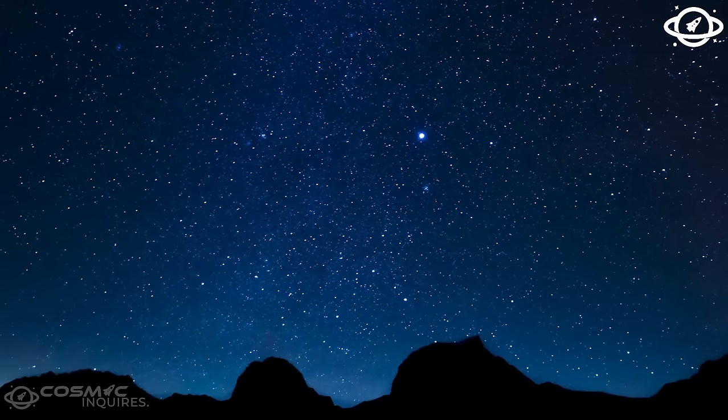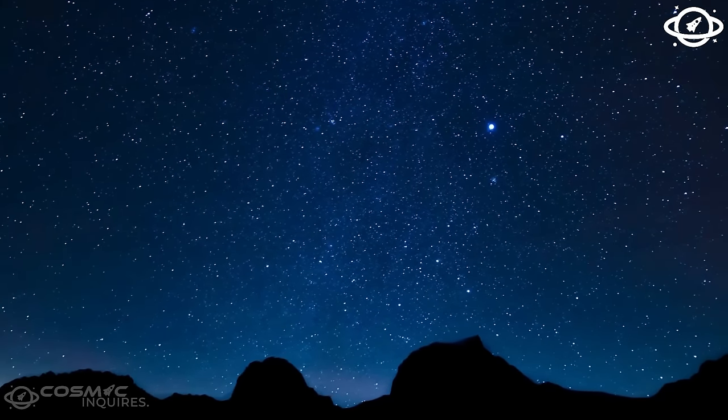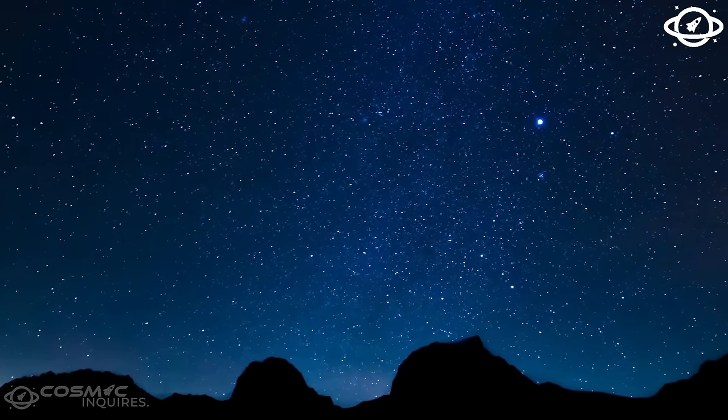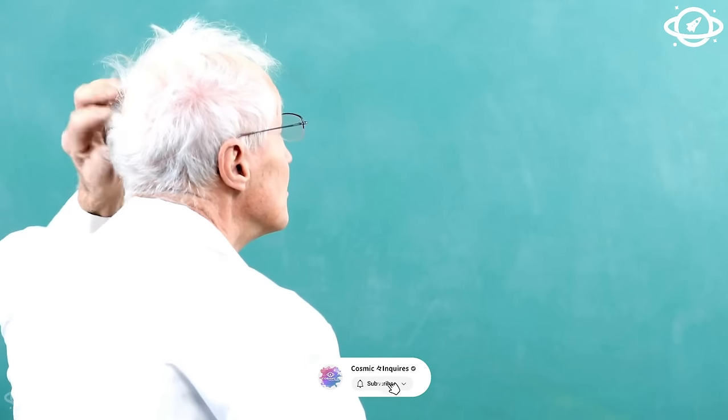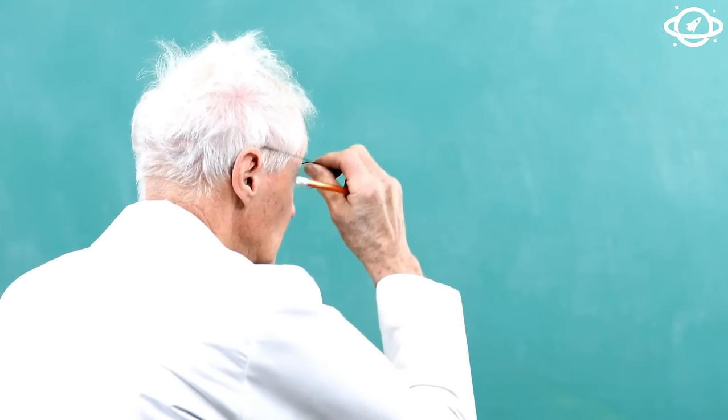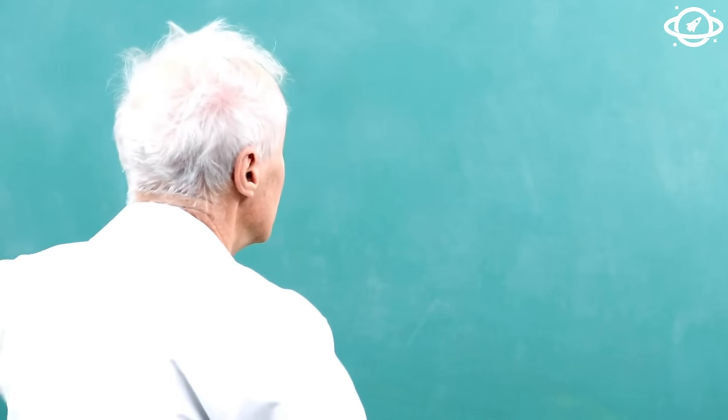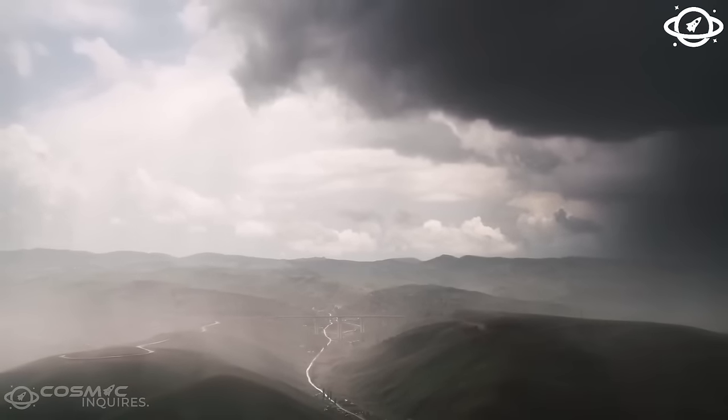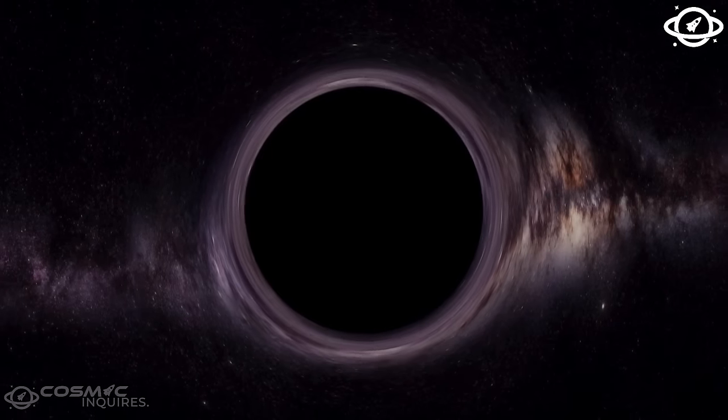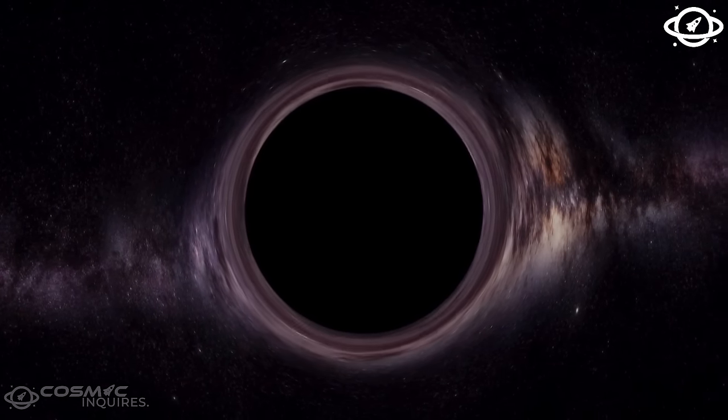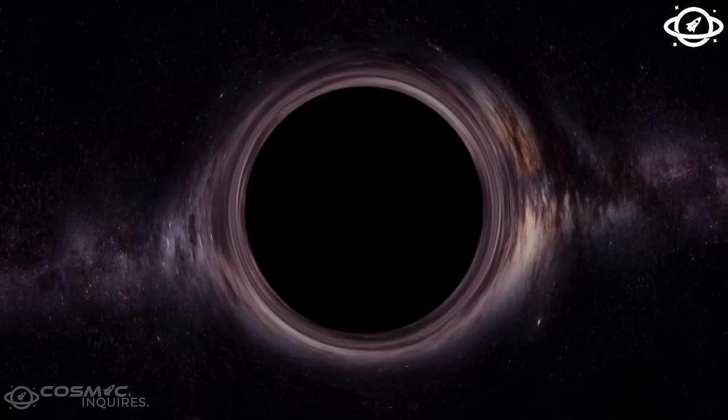One of the most striking confirmations of general relativity came during the solar eclipse of 1919 when Sir Arthur Eddington led an expedition to observe the bending of starlight by the sun's gravity. According to the theory, the sun's massive presence would curve the path of light from distant stars, making them appear slightly out of position. The observations matched Einstein's predictions, solidifying the theory's validity.